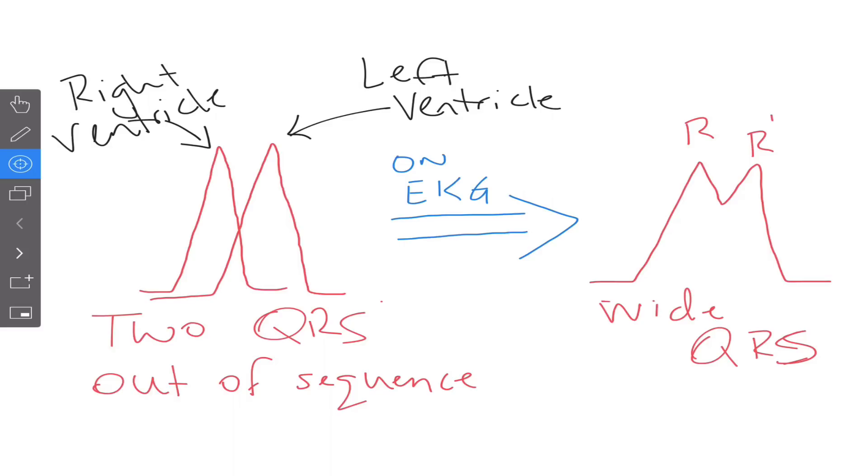That's why we end up seeing these wider QRSs as shown here. We'll go over this in a second. So what causes bundle branch blocks? Well, lots of things: ischemic events, MIs, deterioration from old age, prescription medications, recreational drugs, electrolyte imbalances, and so on.